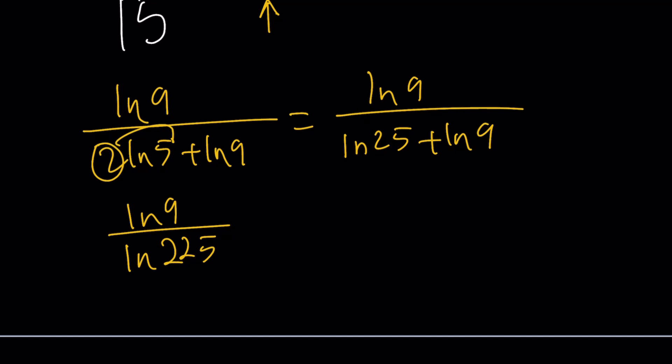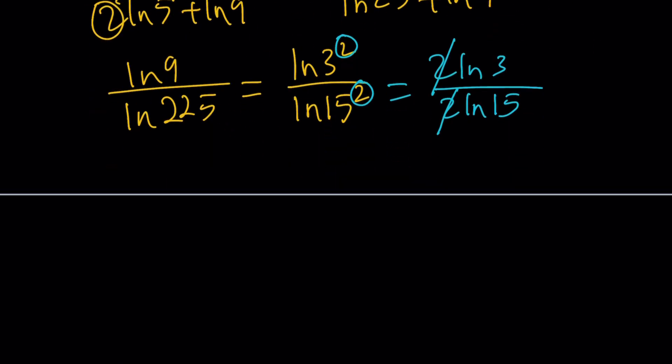Notice, ln 3 squared, and this is ln 15 squared. Isn't that awesome? We've got a 15 at the bottom, which is super-duper nice. Now, we're going to move these powers to the front. That gives us 2 ln 3 divided by 2 ln 15, and these twos cancel out. We end up with 15 to the power ln 3 over ln 15.